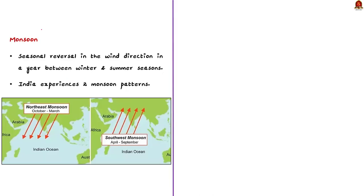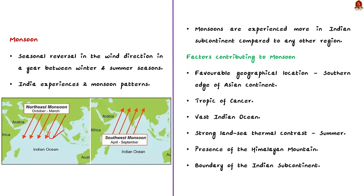Monsoon refers to the seasonal reversal in wind direction during a year, between winter and summer seasons. In India, there is a double system of seasonal winds causing two different monsoon patterns. The first is the southwest monsoon, where wind blows from the southwest, flowing from sea to land during summer. The second is the northeast monsoon, where wind flows from the northeast, from land to sea during winter. Monsoons are experienced more in the Indian subcontinent compared to any other region, due to various factors.